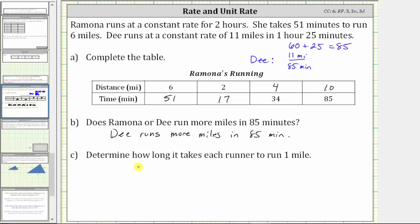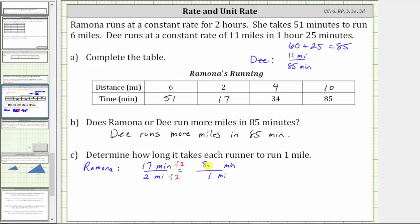For part C, we determine how long it takes each runner to run one mile. Beginning with Ramona, we know it takes her 17 minutes to run two miles. So 17 minutes per two miles must equal an unknown time per one mile. Because two divided by two equals one, we divide 17 minutes by two. 17 divided by two equals 8.5, so it takes Ramona 8.5 minutes to run one mile.